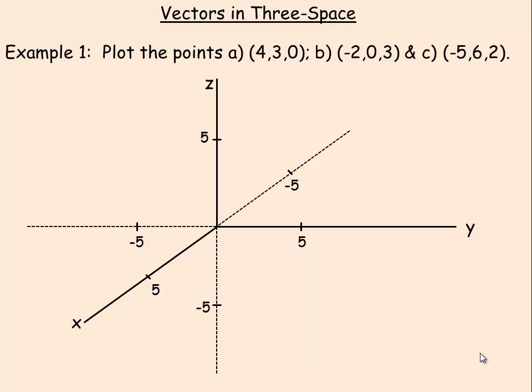In this lesson we'll take a look at vectors in three dimensional space, called 3-space. In the first example we're asked to plot three different points. First of all, the point (4, 3, 0). The first number is the x coordinate, the second is the y coordinate, and the third is the z coordinate. That can locate a point in any three dimensional space.